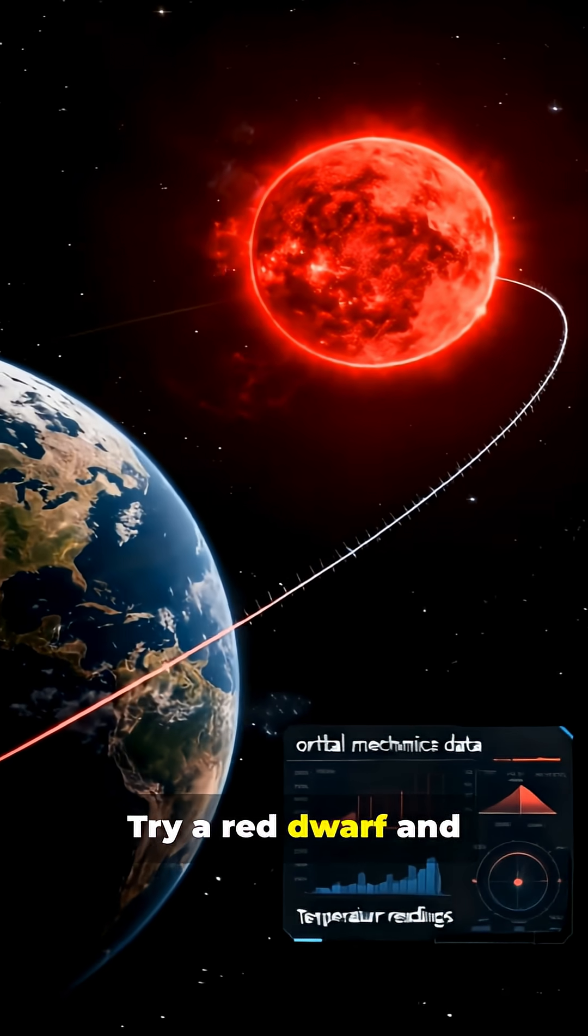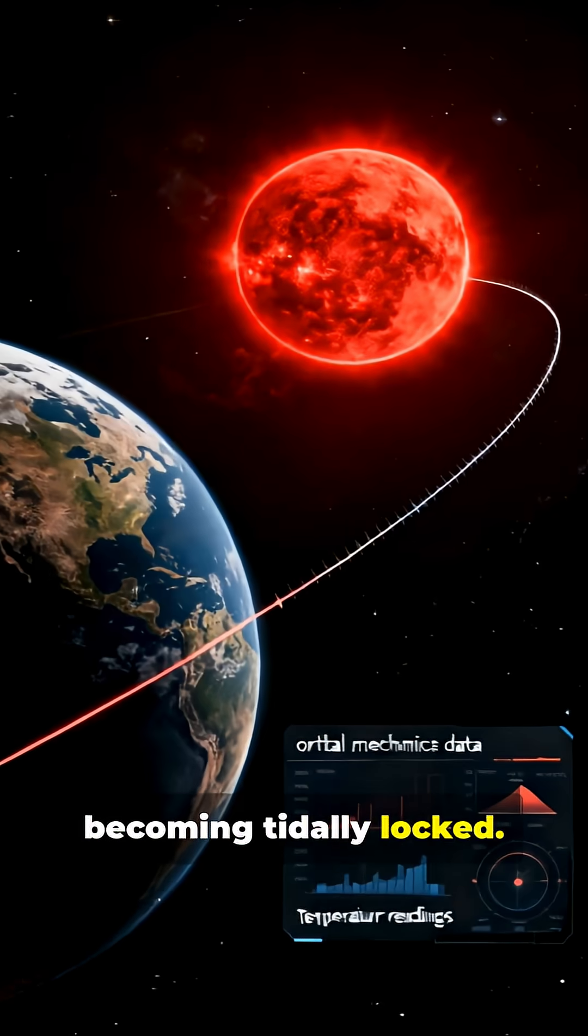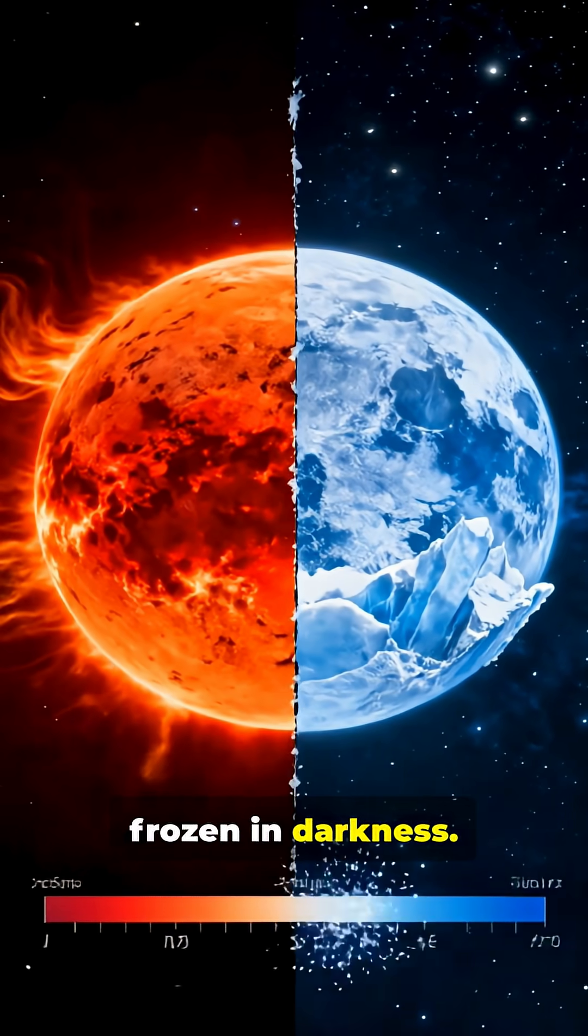Try a red dwarf and Earth moves drastically closer, becoming tidally locked with one side always facing the star and the other frozen in darkness.